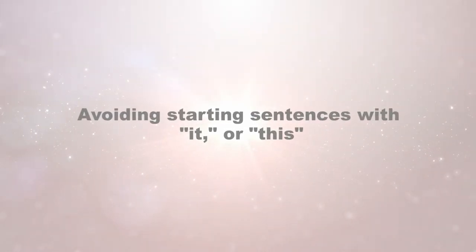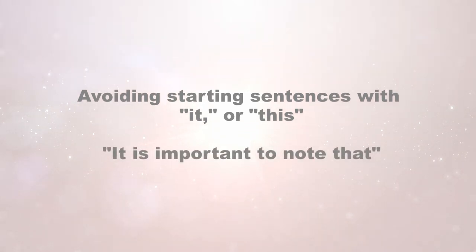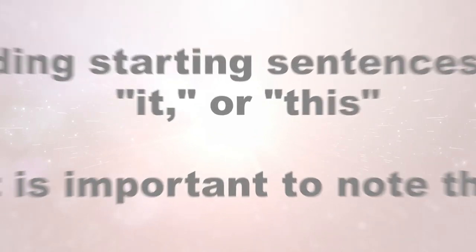Avoid starting sentences with the word 'it' or 'this,' or the phrase 'it's important to note that.' When you start a sentence with just 'it' or 'this,' it can be distracting to the reader who tries to remember what you're referring to. Instead, say 'this book' — say what the 'this' is. Never start a sentence with 'it's important to note that.' If it wasn't important, it wouldn't be in your paper, so all your sentences should be important to note. Avoid that kind of language.